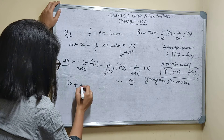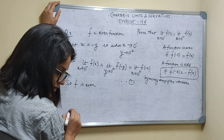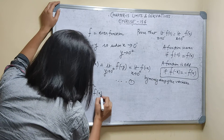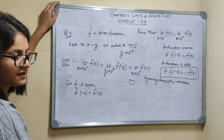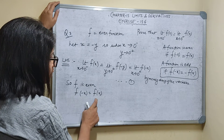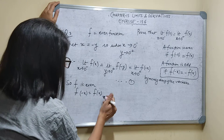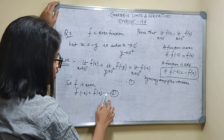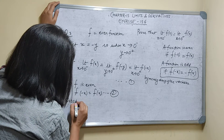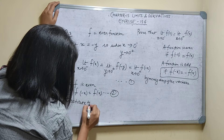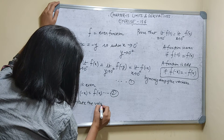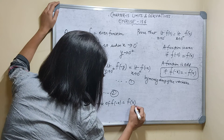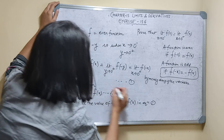Since f is an even function, f(minus x) = f(x). So f(minus x) is equal to f(x) — call this equation number 2. Now substitute the value of f(minus x) = f(x) from equation 2 into equation 1.